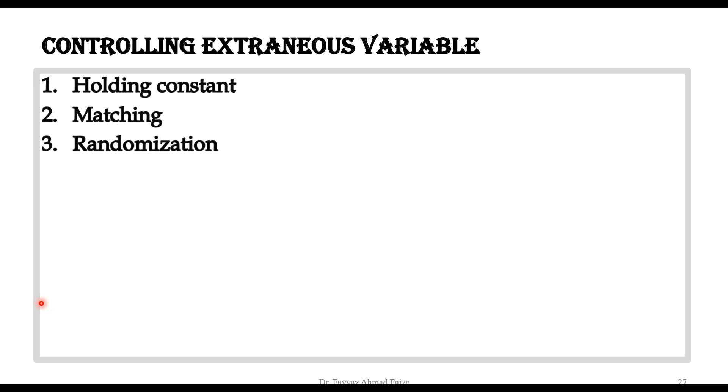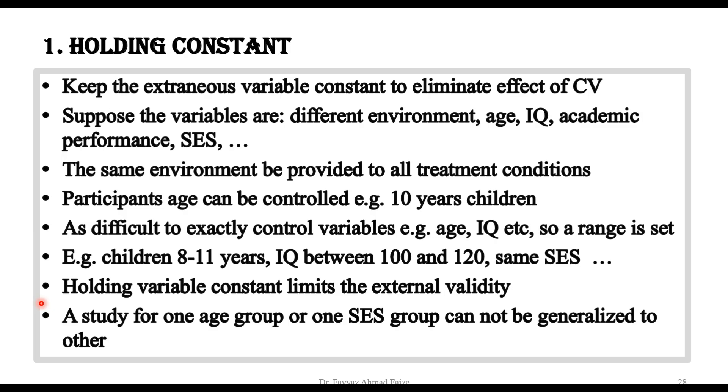Today we will learn about how to control extraneous variables. An extraneous variable can also be called a confounding variable, because an extraneous variable turns into a confounding variable if it is not controlled and therefore affects our dependent variable. We will discuss three ways to control extraneous or confounding variables: holding constant, matching, and randomization.